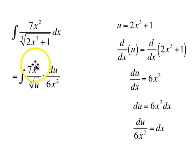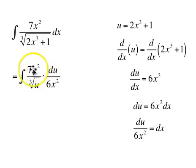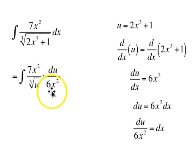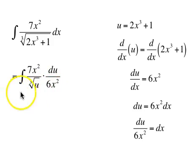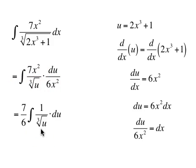But the good news again — the x squareds divide out and all the x's go away. We have a 7 upstairs and a 6 downstairs, so we pull out 7 sixths, and we have 1 over the cube root of u du.